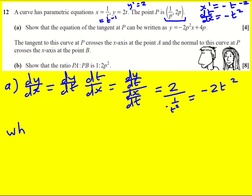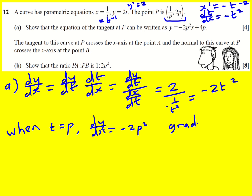Now when t is equal to p, which is what's required for this point, dy/dx is going to be minus 2p squared, and this is the gradient at p of the curve described by the parametric equations — and also of the tangent.